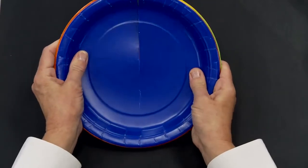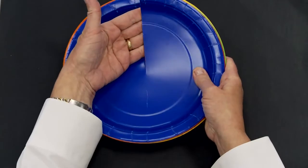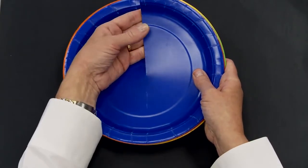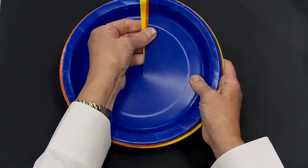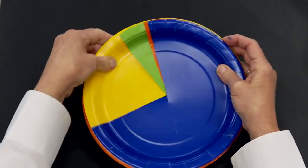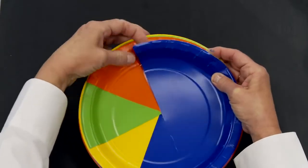Then they're going to flip them back over and insert their hand along that radius cut. And once your hand's in there, then you're going to rotate, slide those plates around to show different fractions of a whole.